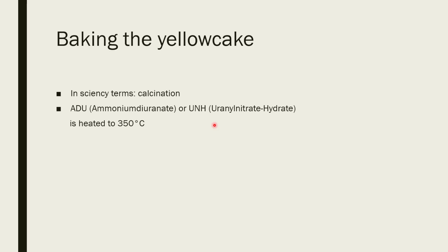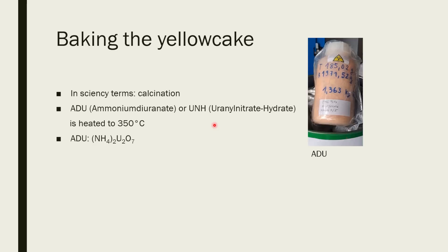One step is to bake the yellow cake, which is the most common purification step. From this, either you have the ammonium diuranate, which I talked about on the previous slide, or you can have the uranyl nitrate hexahydrate, which is also a quite common type of uranyl compound. And this is just heated to 350 degrees C.